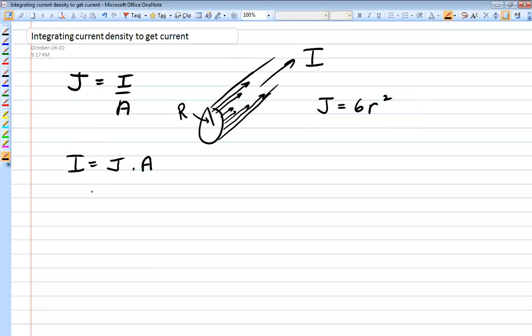And if J is not constant, this becomes an integral where we have J. And then we have to break that cross-sectional area into little area units dA.